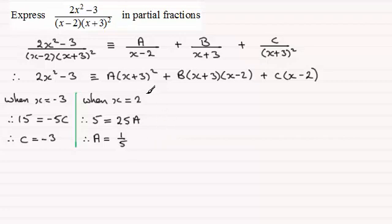Now for the next value of x that we're going to need well we can't have any other value that makes any of these brackets 0. So we need to choose a particular value of x or we could compare coefficients say of x squared. I'll show you both methods. Choosing a value of x, you can choose any value you like other than minus 3 and 2. But I'm going to go for 0.